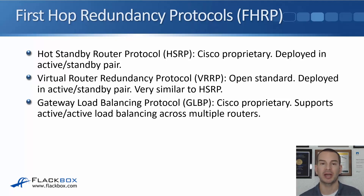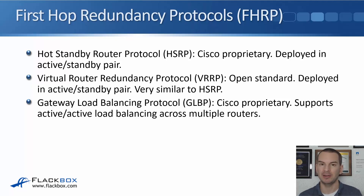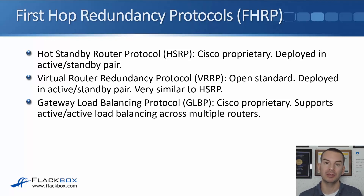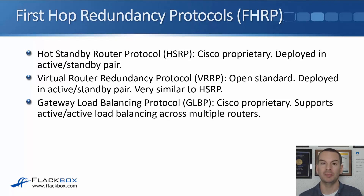The next option is VRRP — the Virtual Router Redundancy Protocol. This is very similar to HSRP; it's also deployed in an active/standby pair, but VRRP is an open standard, so it's not just supported on Cisco routers. It's so similar that if you look at the configuration between HSRP and VRRP, it's nearly exactly the same — apart from HSRP uses the keyword 'standby' and VRRP uses the keyword 'VRRP'.